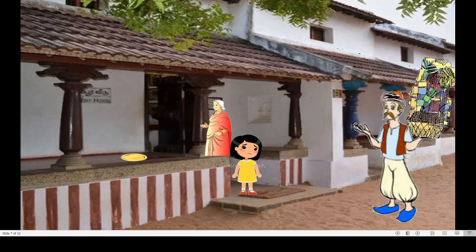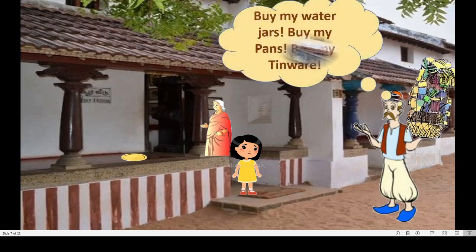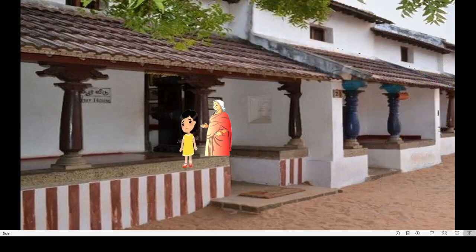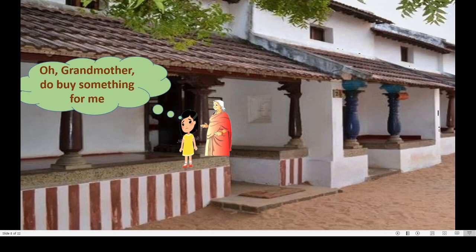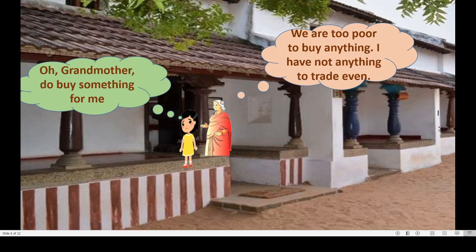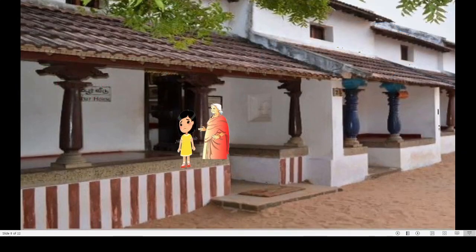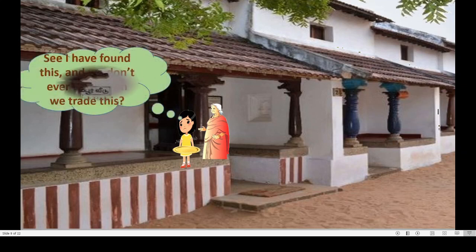The greedy merchant passed this house calling, 'Buy my water jars, buy my pans, buy my tinware.' The granddaughter said, 'Oh grandmother, do buy something for me.' Then the grandmother said, 'My dear, we are too poor to buy anything. I have not anything to trade even.' The granddaughter replied, 'Grandmother, I have found this gold dish among other pots and pans on the shelf — we don't ever use it. Can we trade this? Perhaps the merchant will take it and give us something nice for it.'